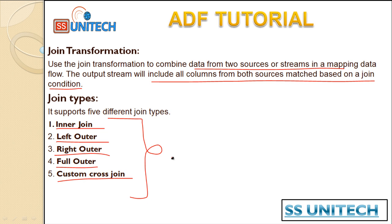In case of the inner join, whatever data sets we have inside the left and inside the right - all the matching data sets from the left and the right side will be returned. In case of the left outer join, it will return all the data from the left table and matching data from the right table.